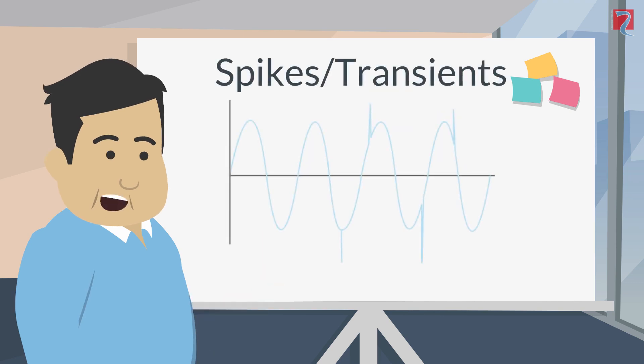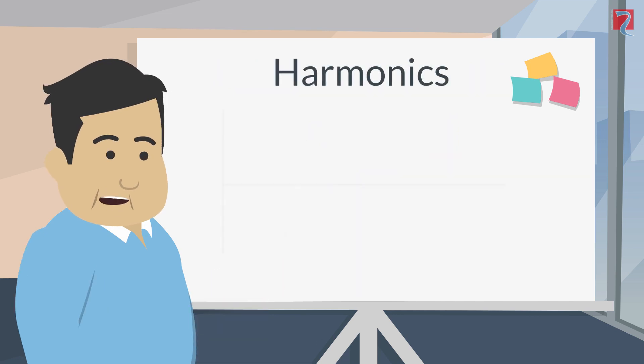Spikes and transients: a fast moving high energy burst lasting only a few milliseconds. Harmonics: distortion of the waveform generally caused by the load.